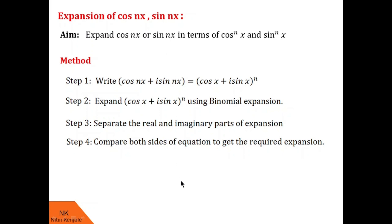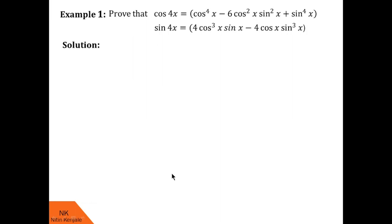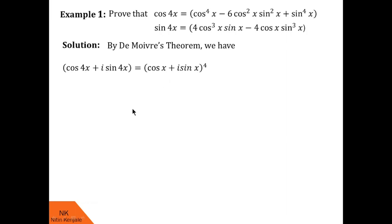I hope you understood these steps. Now let me show you some real examples. In this example, we are asked to prove the expansion of cos 4x and sin 4x. So let us proceed step by step. In step 1, no matter whose expansion you want — cos 4x or sin 4x — we always begin with cos nx + i sin nx = (cos x + i sin x)^n. Here n is 4.